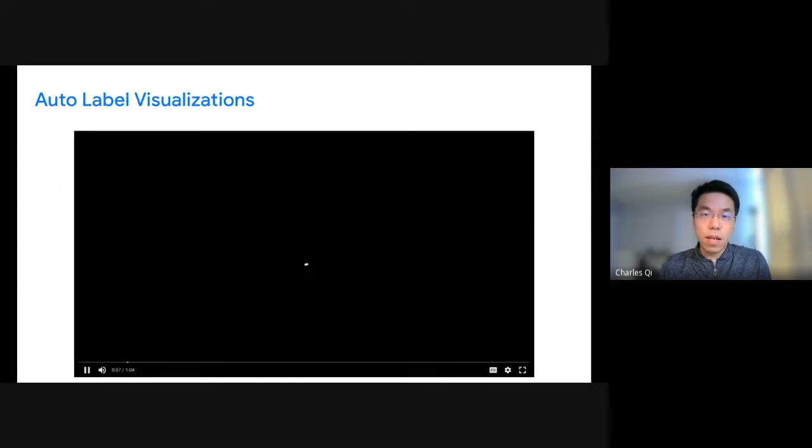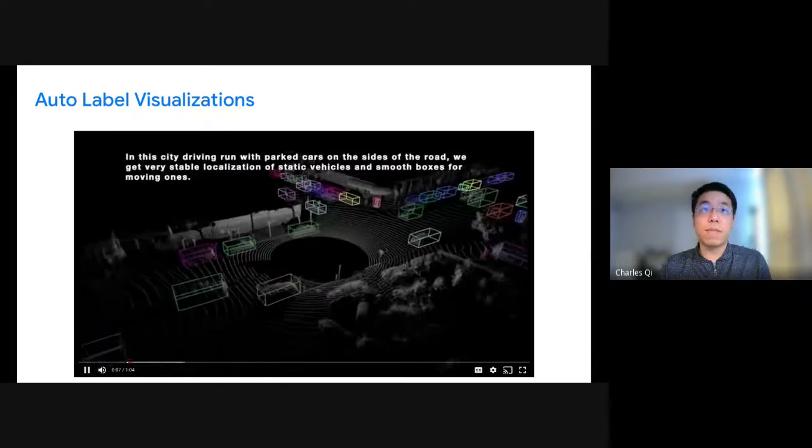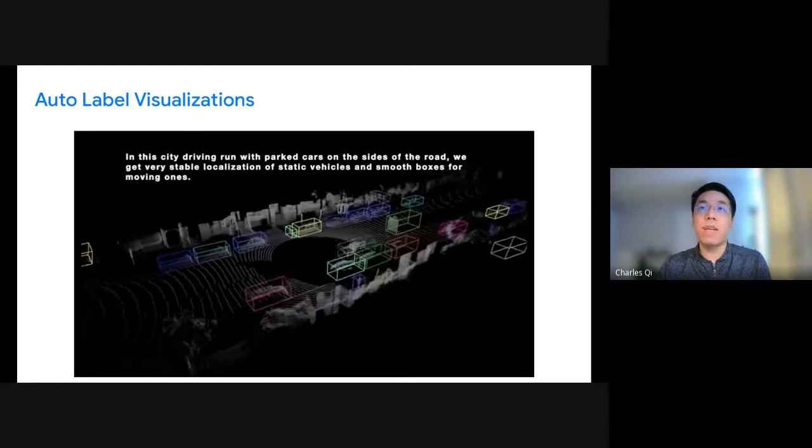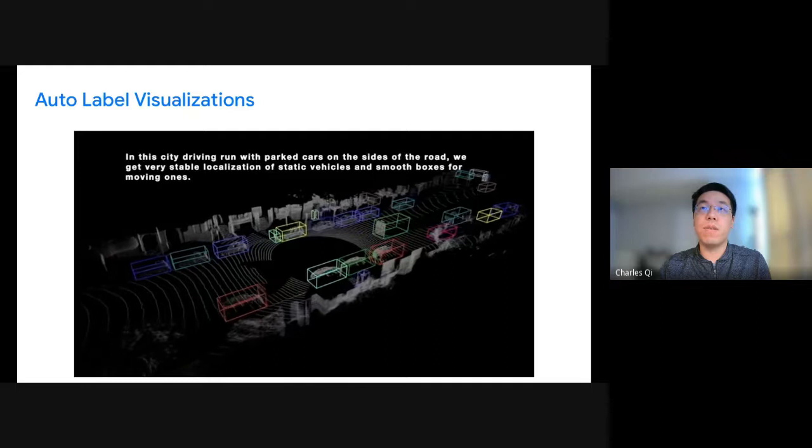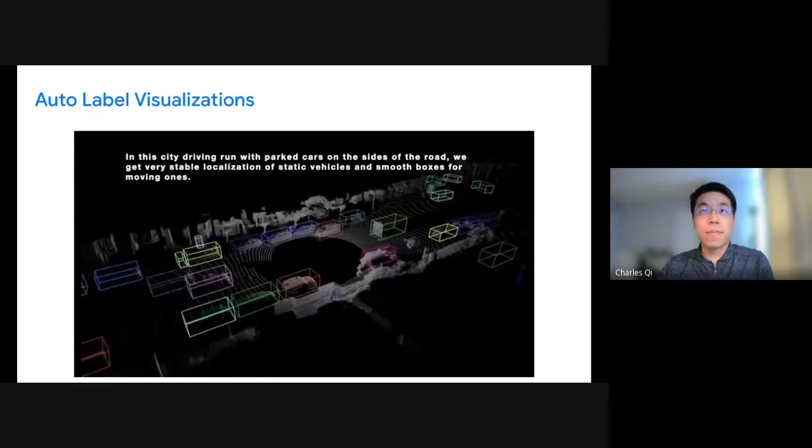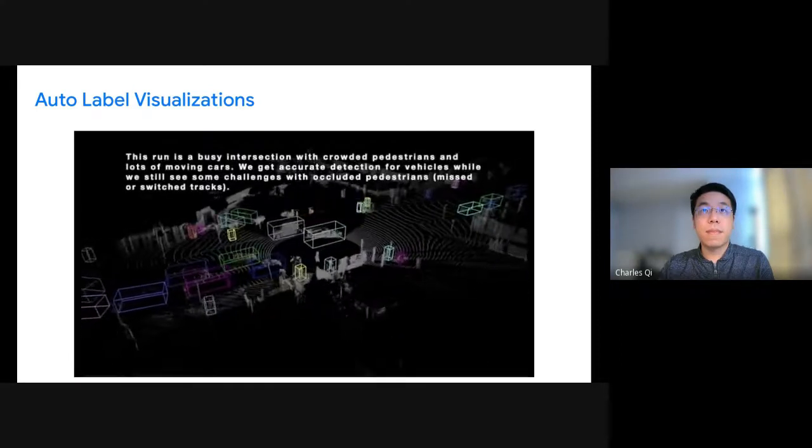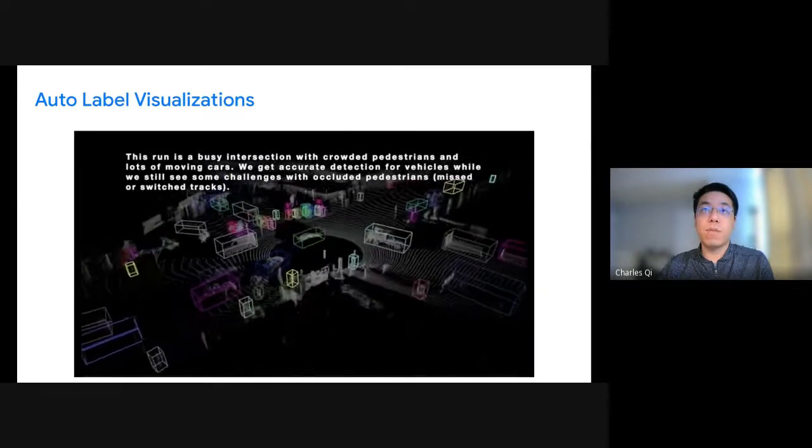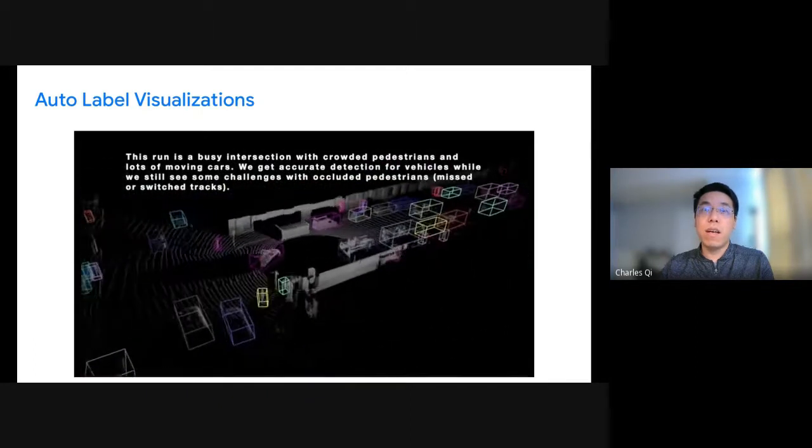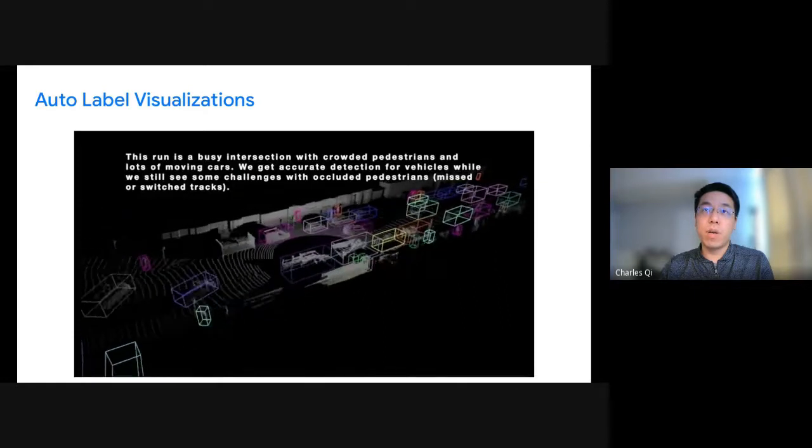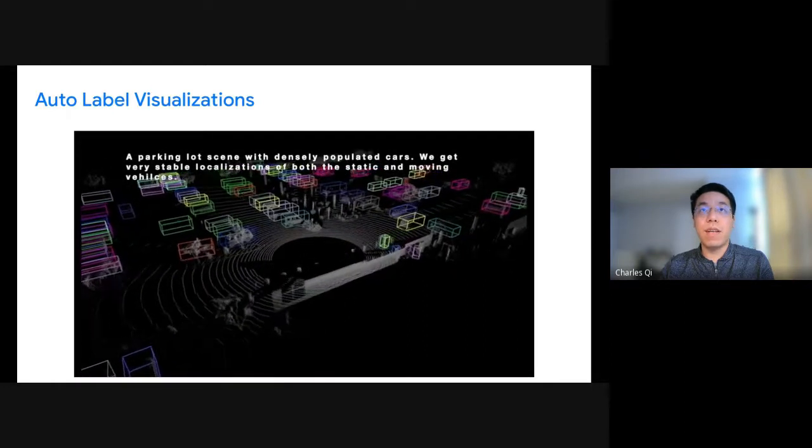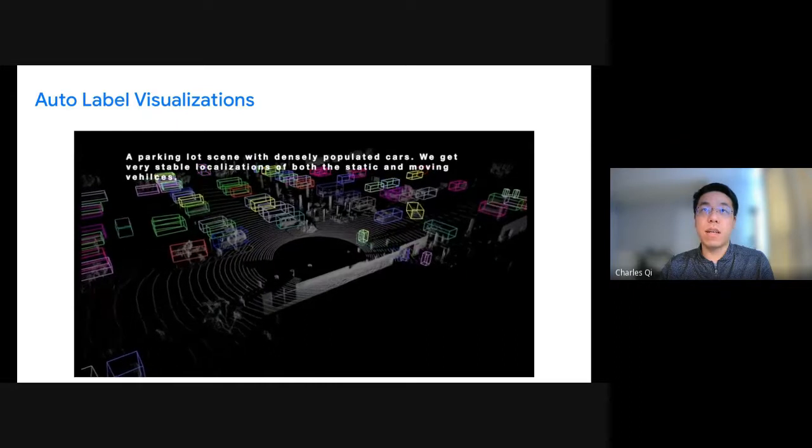Now let's look at some visualization results. So this is a city driving scene with many parked cars. We can see those parked cars are really stable, and we have very smooth boxes for the moving cars as well. And here is a very busy intersection with lots of pedestrians and turning cars. Look at how accurate the headings are for the cars. Notice there are still some flickering for the pedestrian, because tracking dense pedestrian crowds is very challenging. I think that's somewhere we can further improve. And here is a very crowded parking lot, lots of cars.